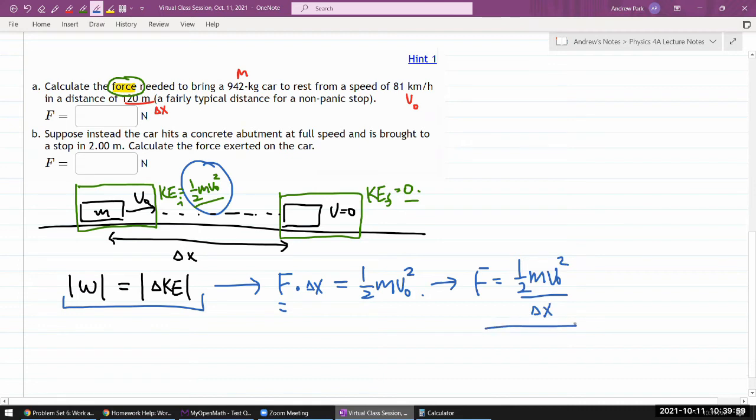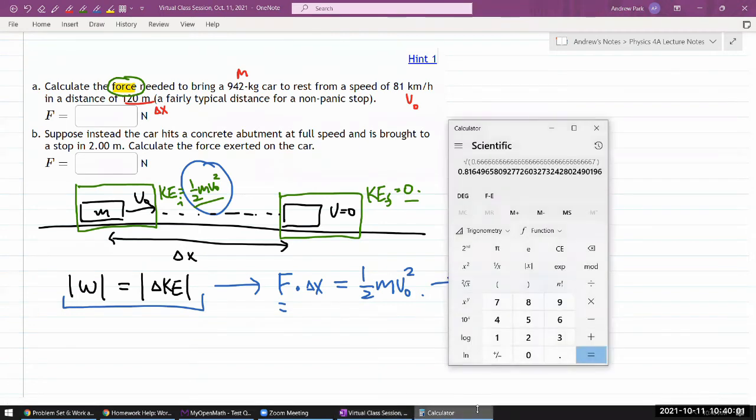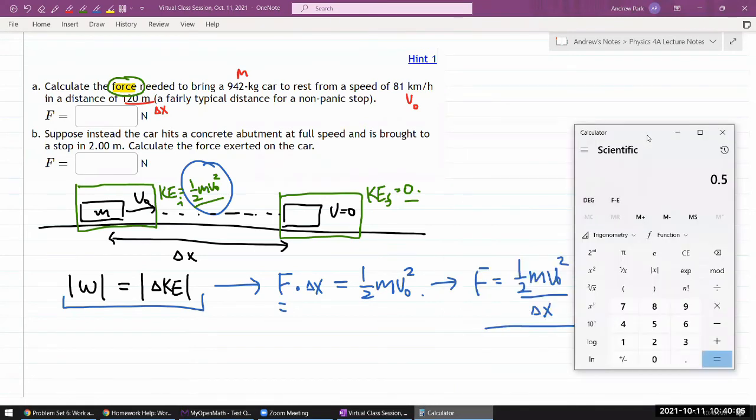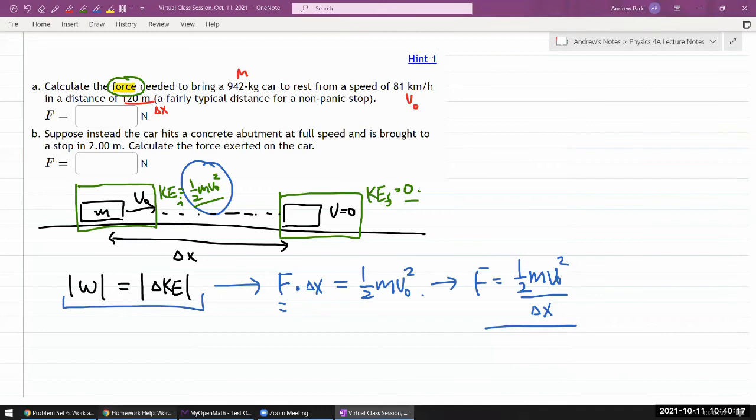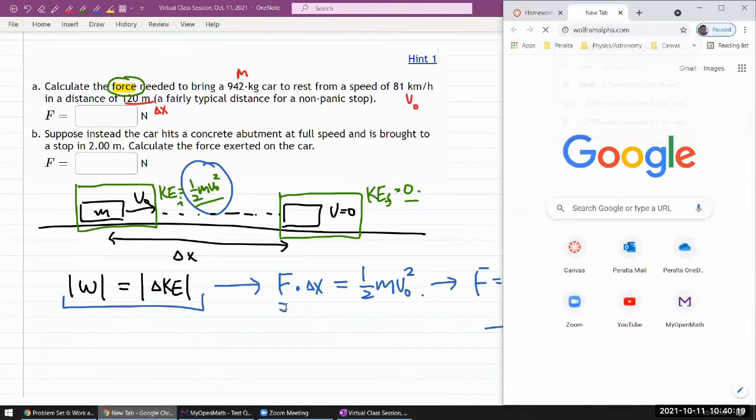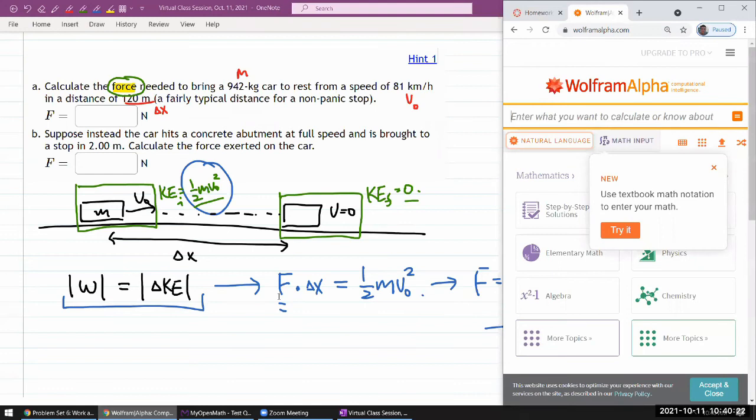So let's plug in the numbers and see. Okay, I have one half mass, 942, one half times 942 times speed, oh, 81 kilometers per hour. You know what? I don't want to do this in a calculator. Let me do this in Wolfram Alpha so that I don't have to convert units.